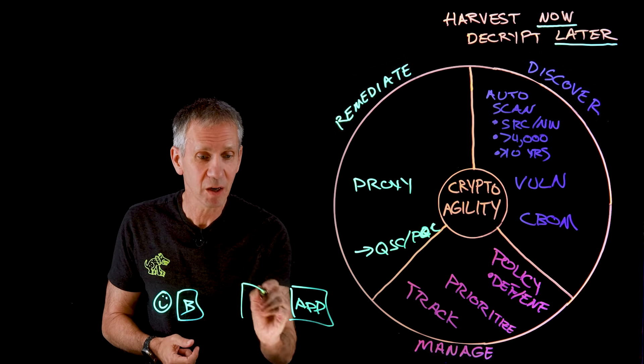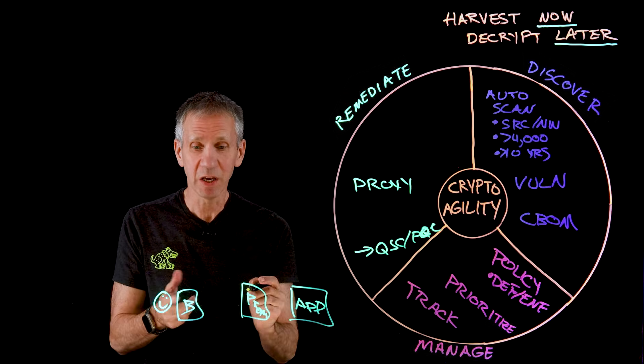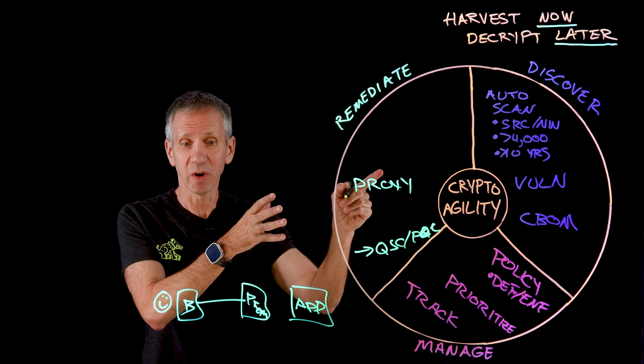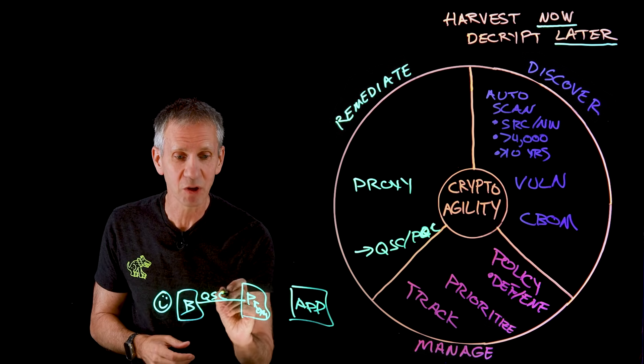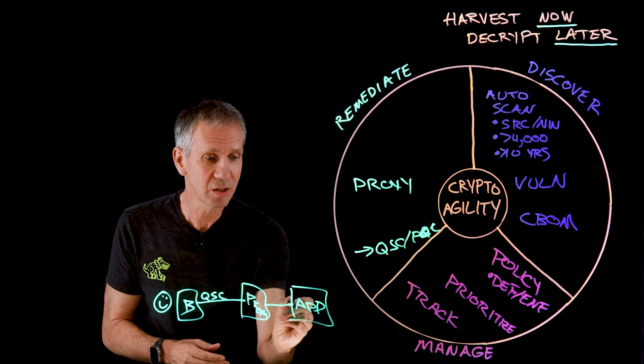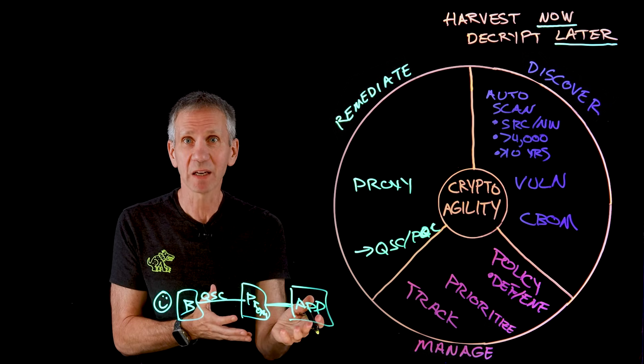So what I could do is stand up a proxy in the middle. This proxy would be communicating. It understands the quantum-safe crypto algorithms. So it's doing quantum-safe crypto between the browser and the proxy. And then the proxy continues with the normal classical algorithms back to the back-end application.